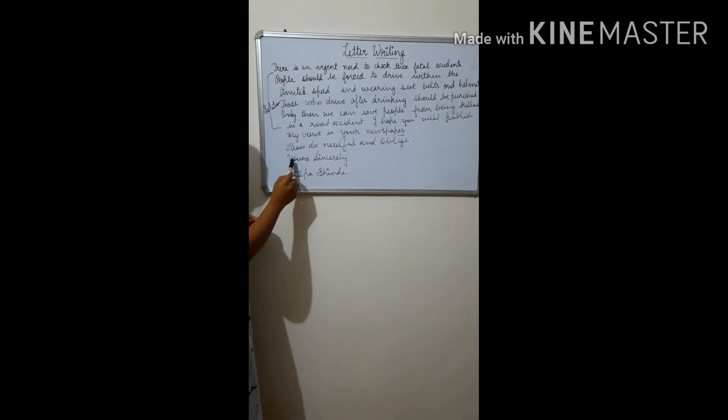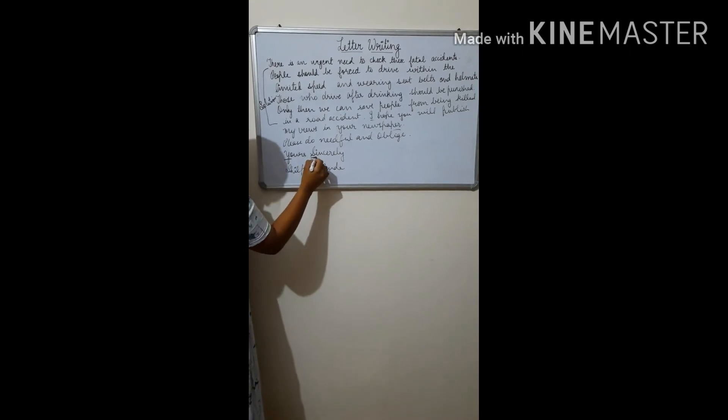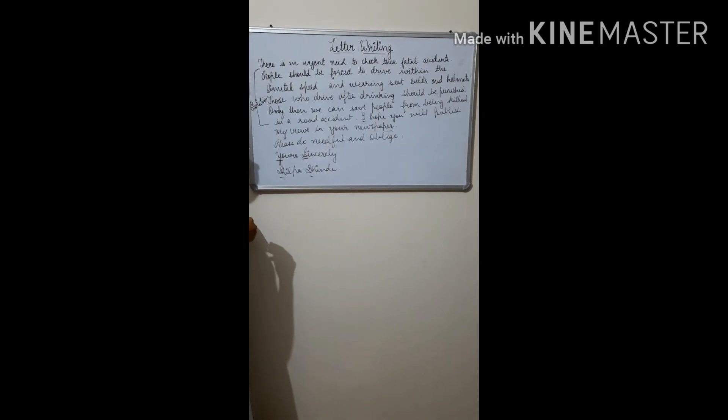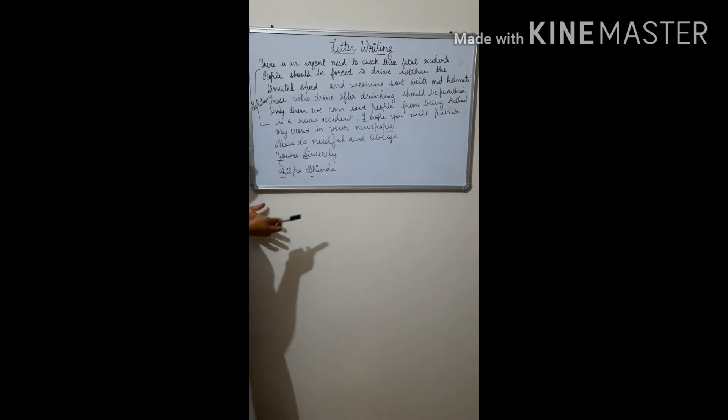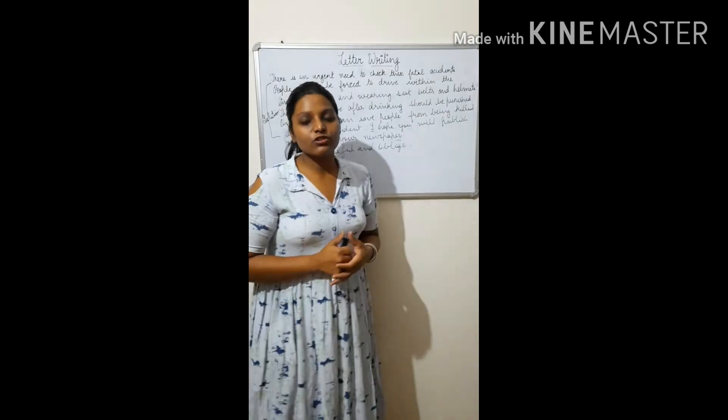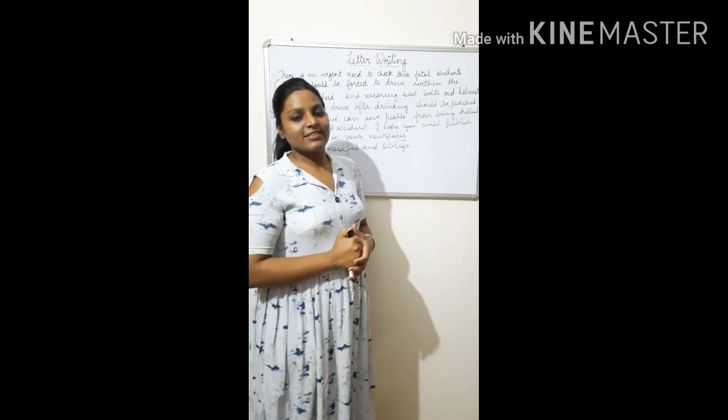After that, you will write yours sincerely. Letters Y and S should be capital. Now the name of resident of Kaloni Shiva. So this is the example. I hope you understand. Thank you students for joining the class. Please do like, share and subscribe my channel. Thank you.